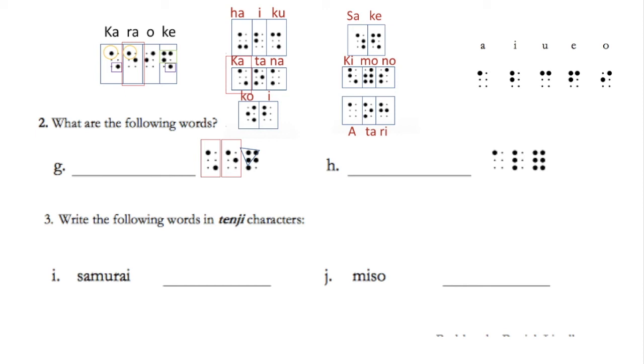Therefore, the third syllable is te. Therefore, 2G's answer is karate.